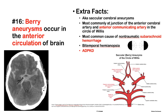Number 16: Berry aneurysms occur in the anterior circulation of the brain. Also known as saccular cerebral aneurysms, they are most commonly located at the junction of the anterior cerebral artery and the anterior communicating artery in the circle of Willis, accounting for 40% of all saccular aneurysms. Another 34% are at the middle cerebral artery. A physical exam finding is bitemporal hemianopsia, caused by pressure on the optic chiasm from the anterior communicating artery aneurysm.